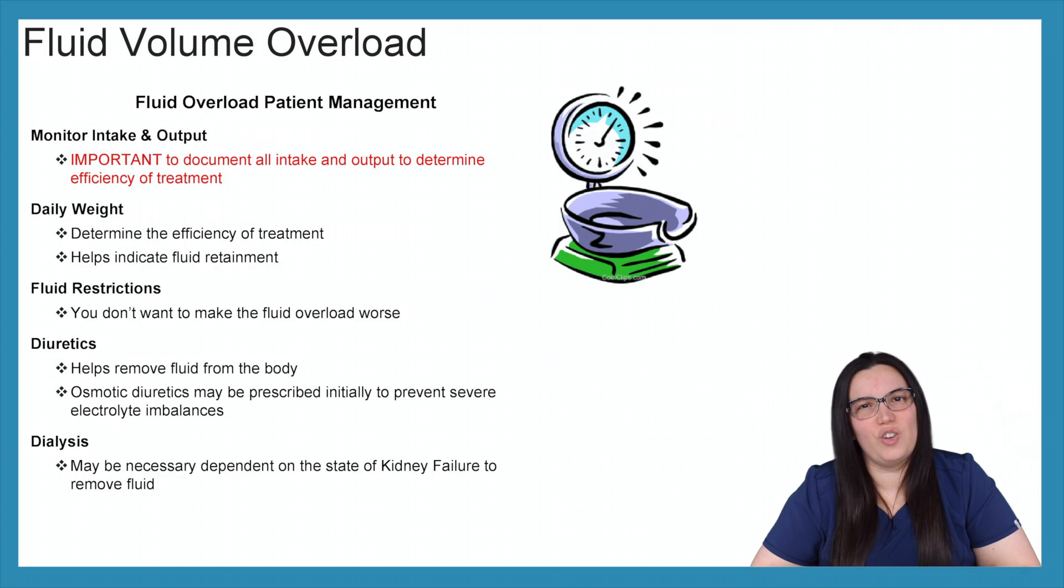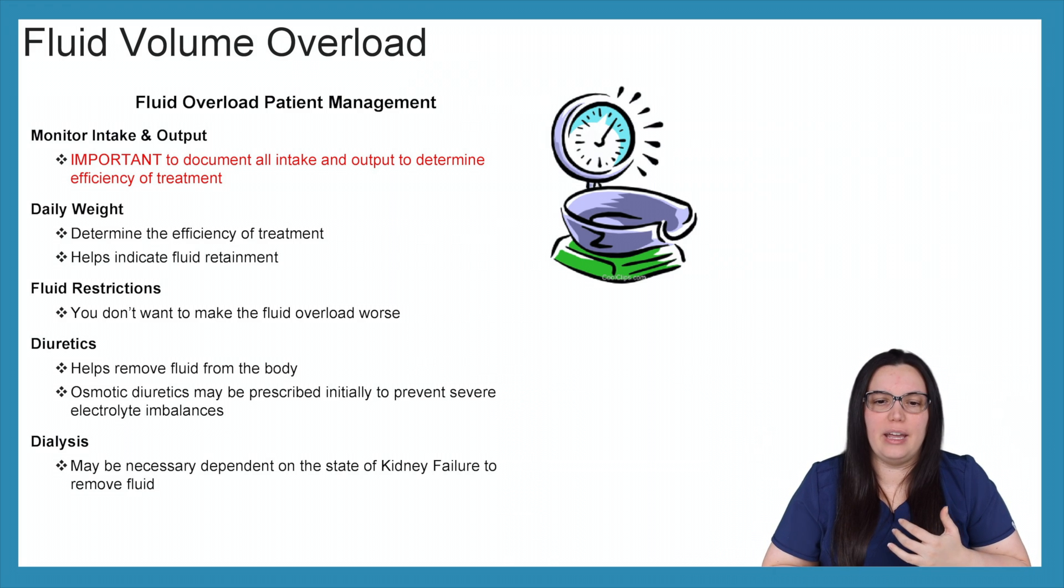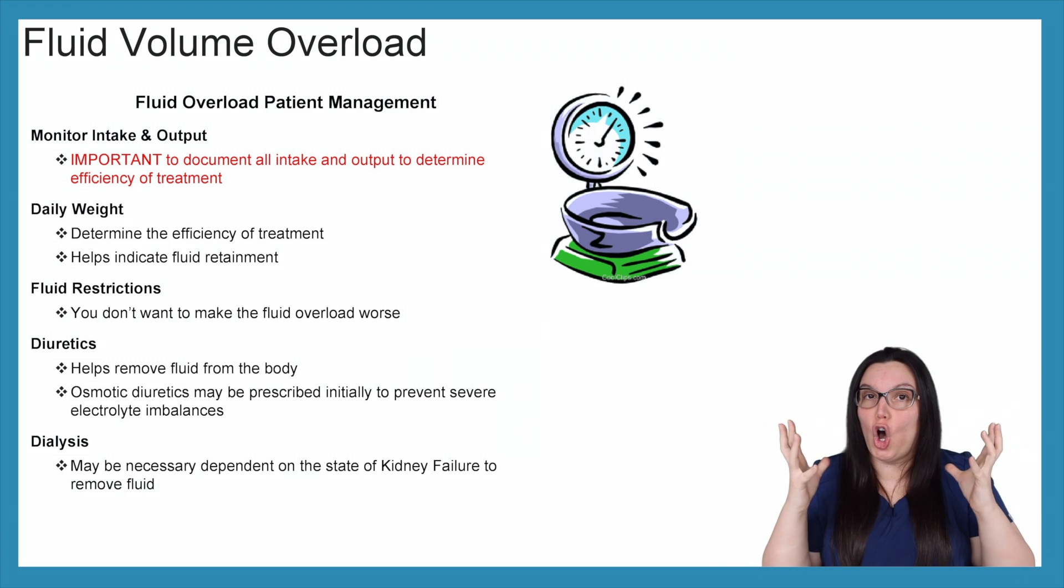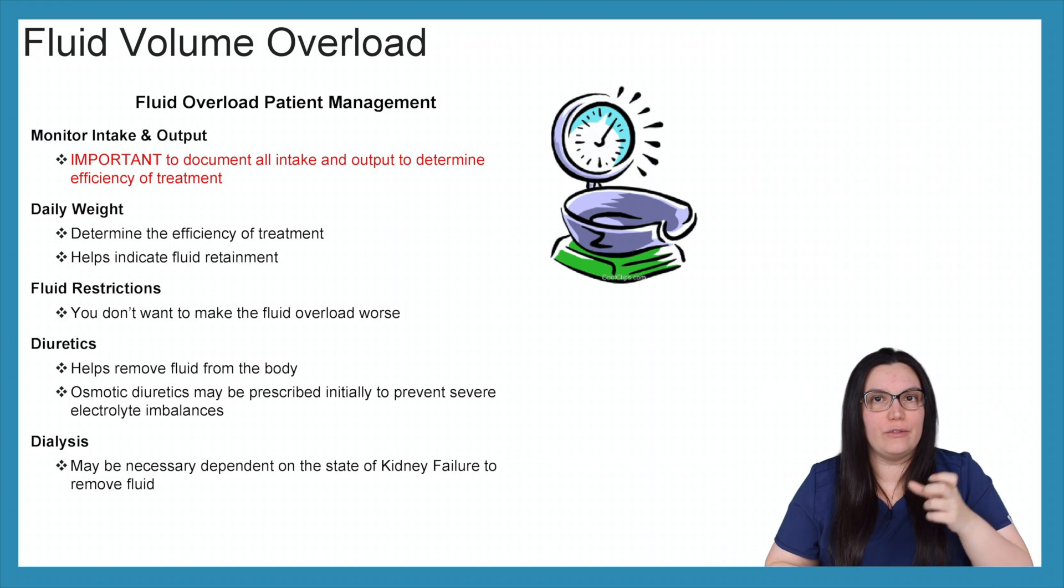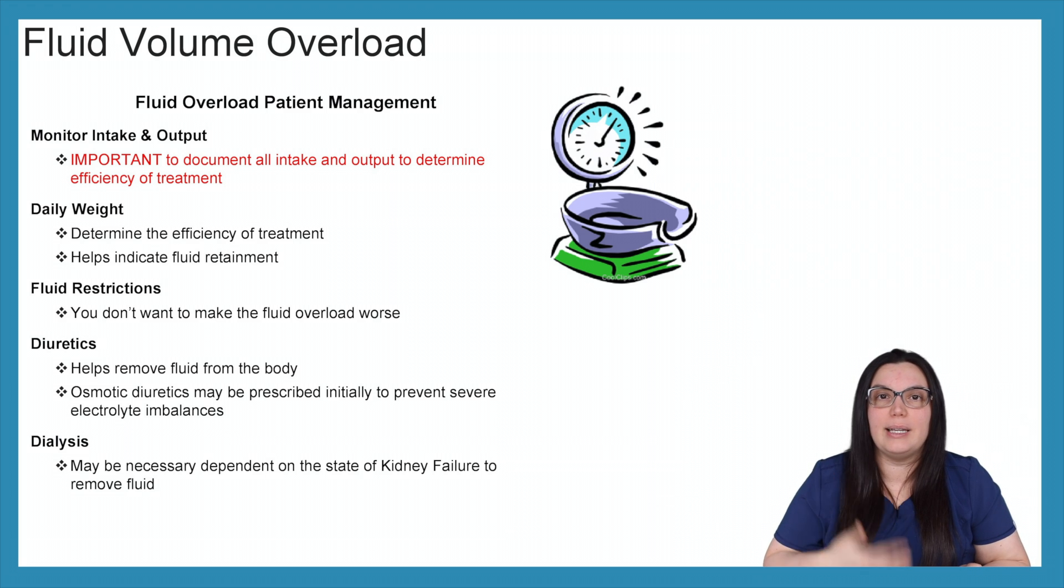So how are we going to manage this patient over your next 12 hours? So we're going to monitor intake and output. It's important to document all intake and output to determine the efficiency of treatment. So as we're continuously giving medications to try to help with this fluid overload, we want to make sure that our treatment is efficient. We're also going to do daily weights because we need to determine if the treatment is efficient and if we're able to get rid of that fluid. It also helps us indicate if fluid is being retained. We don't want to retain fluid. We want to get rid of it. So we always check our daily weights. Fluid restrictions is a big one.